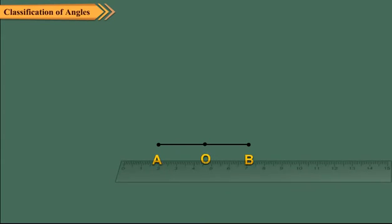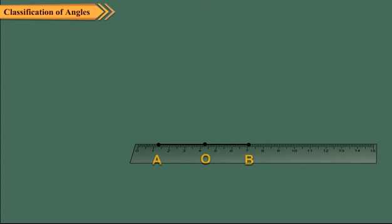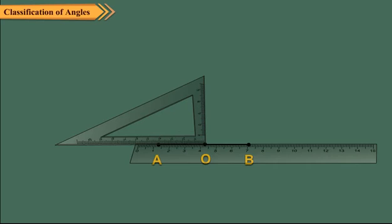Place the ruler along AB and hold it tightly. Now place a set square adjacent to the ruler such that the corner with 90 degrees coincides with the point O.